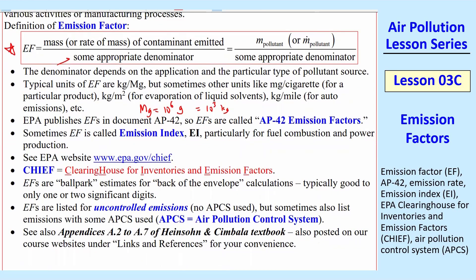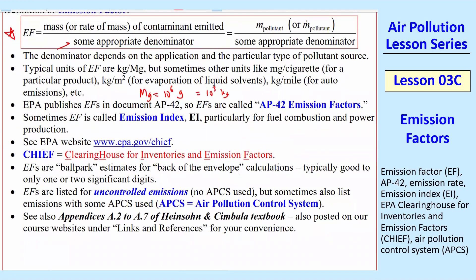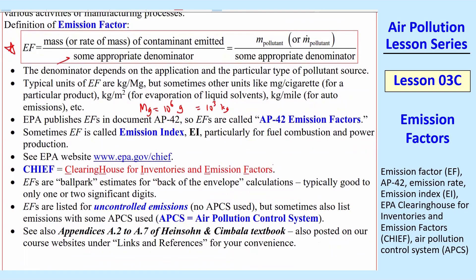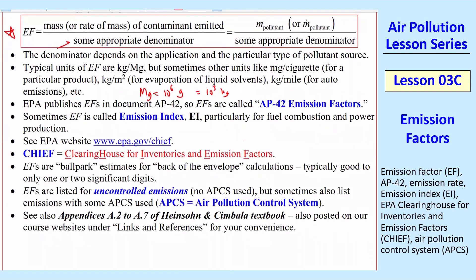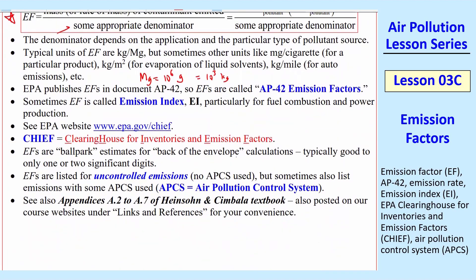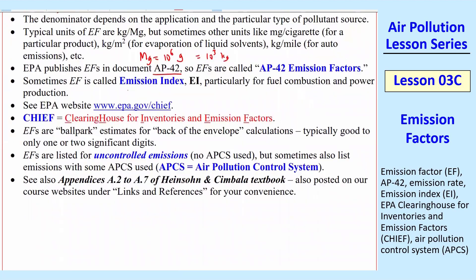The denominator can have many other units. For cigarettes it might be milligram per cigarette; for evaporation, kilogram per meter squared; for auto emissions, kilogram per mile. The EPA publishes these emission factors in a document originally called AP42, so you'll sometimes hear people refer to AP42 emission factors. There's also an alternate name EI, which stands for the website CHIEF — Clearinghouse for Inventories and Emission Factors. Keep in mind these are ballpark back-of-the-envelope calculations, typically only good to about one or two significant digits.